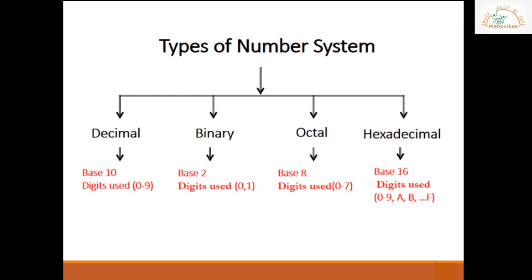Hexadecimal number system. The base of this number system is 16. The digits can be 0 to 9, and anything more than 9 can be represented with the help of alphabets starting from capital A to F. Capital A has the value 10, B has the value 11, C is 12, and so on.